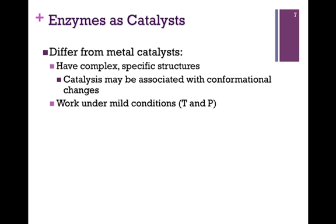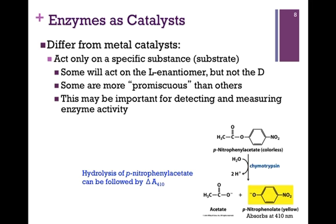Let's look at how biological catalysts differ from metal catalysts. First, they have very complex, very specific structures, and catalysis may be associated with conformational changes. They also work under mild conditions with regard to temperature and pressure, whereas metal catalysts often require elevated temperature or pressure or both. They also differ in that they only act on a specific substance called the substrate — some are so specific that they will act on the L enantiomer but not the D. Others may be more forgiving with regard to the substrates they bind, and we can use this to our advantage for detecting and measuring enzyme activity.